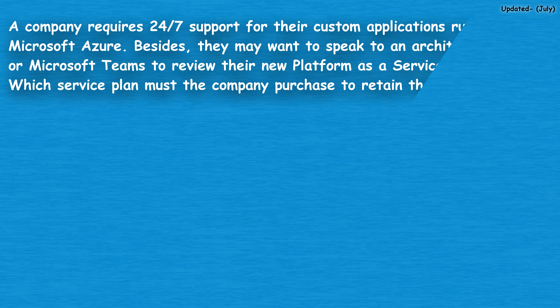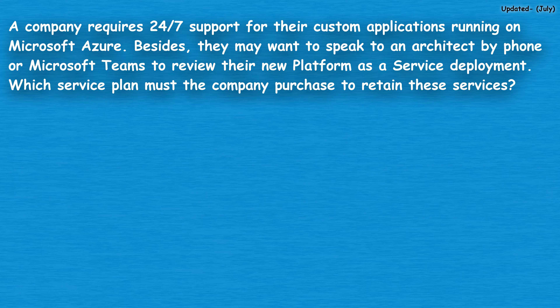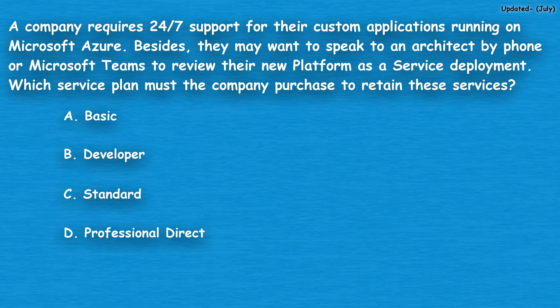The next question: a company requires 24/7 support for their custom applications running on Microsoft Azure. Besides, they may want to speak to an architect by phone or Microsoft Teams to review their new platform as a service deployment. Which service plan must the company purchase to retain these services? Option A: basic. Option B: developer. Option C: standard. Option D: professional direct.